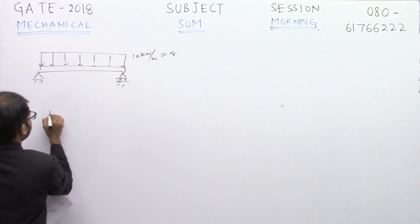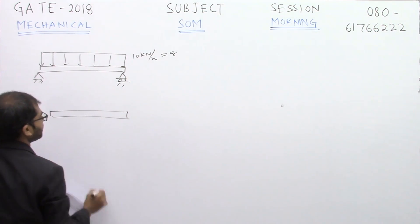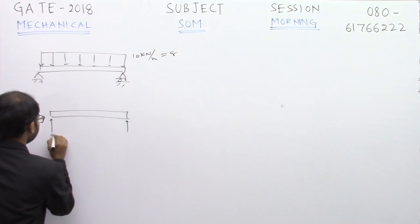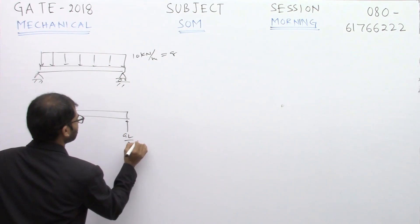If you are drawing the free body diagram and finding out the reaction forces, you will get this one to be qL by 2, and this one also qL by 2.